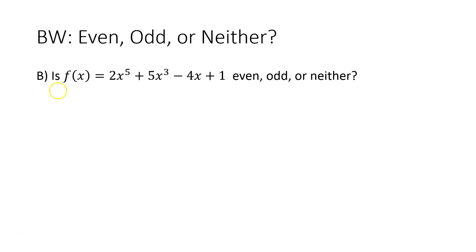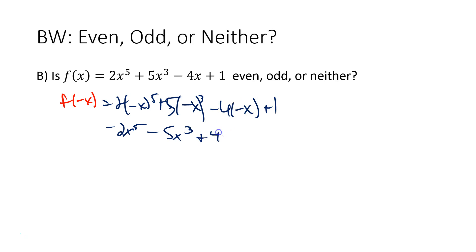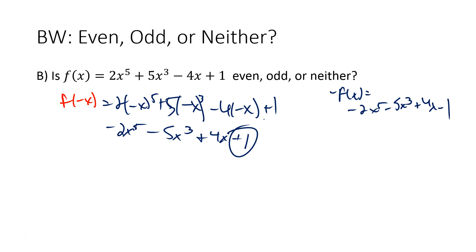Let's try another one — even, odd, or neither? We do that by plugging in f(-x). So f(-x) = 2(-x)⁵ + 5(-x)³ - 4(-x) + 1. The negative preserves through the fifth power, giving negative 2x⁵. Then minus 5x³, plus 4x, and then plus 1. Now, the opposite of the function would be negative 2x⁵ - 5x³ + 4x - 1. We almost have that, but the constant 1 did not change — the 1 did not flip to negative 1. So in this case, we have neither.